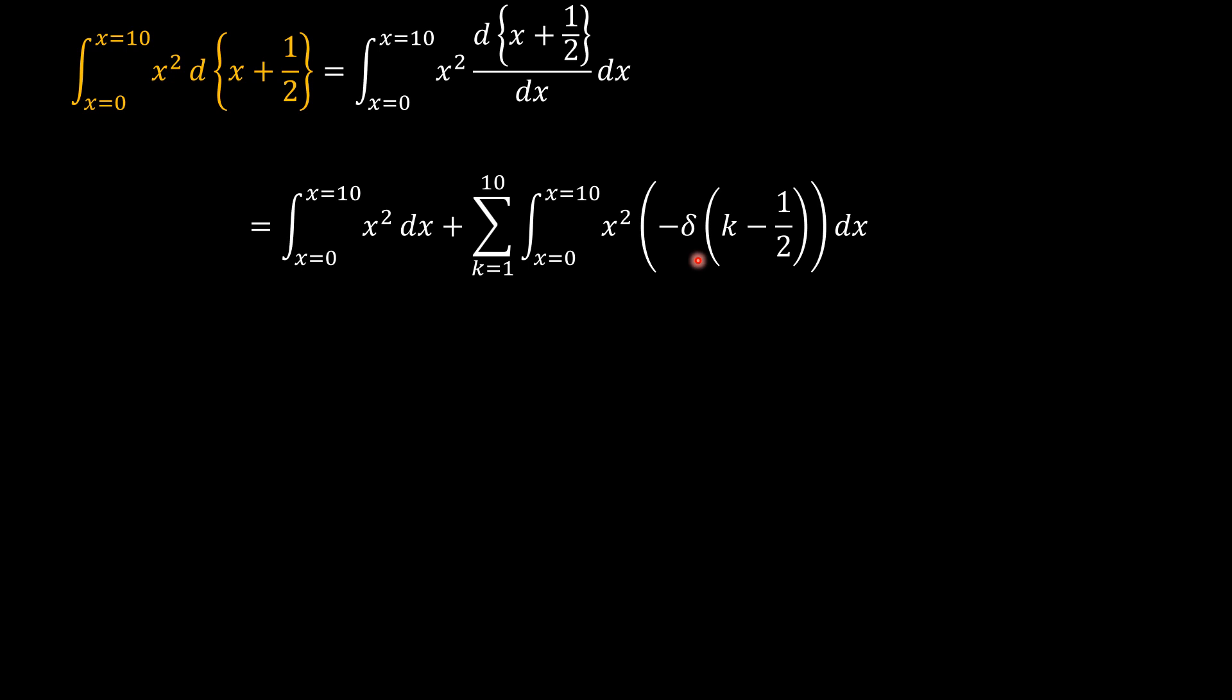What this is telling us is that we have this value tending to negative infinity instantaneously, but when you integrate it, it calls out that value at the specific location of x equals k minus one-half.